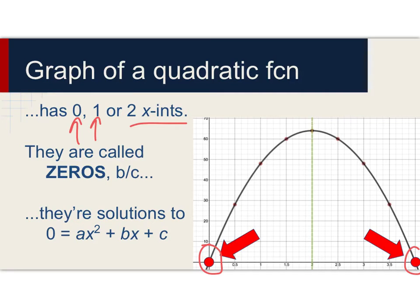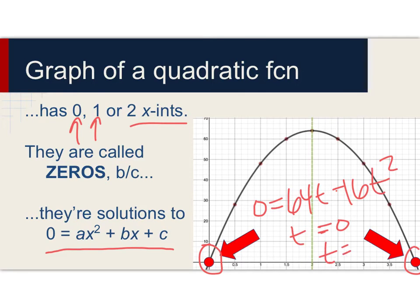We call these the zeros of the quadratic function, and we do that because they are solutions to the altered version of our quadratic function. We'll call this a quadratic equation. We replace the f(x) with zero. So if we had replaced f(x) with zero in the initial problem, the solutions to 0 = 64t - 16t² are t = 0 and t = 4.